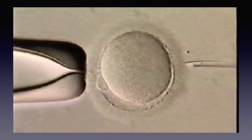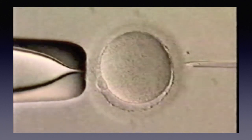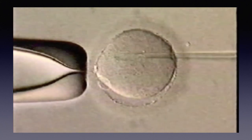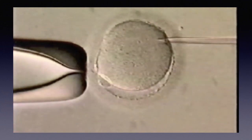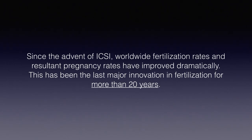Intracytoplasmic sperm injection, or ICSI, is an assisted fertilization procedure whereby a single sperm is selected and injected directly into an egg in vitro. There is wide variability in the indications for ICSI. Many recommend its use when a semen sample contains less than four percent normal sperm according to the World Health Organization criteria. ICSI, originally performed in the early 90s, is one of the most important innovations in the history of in vitro fertilization. Since its advent, worldwide fertilization and resultant pregnancy rates have improved dramatically for male factor infertility.